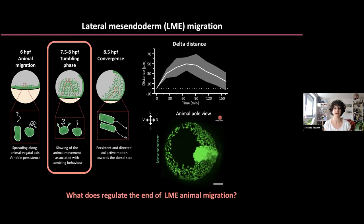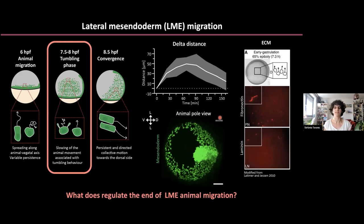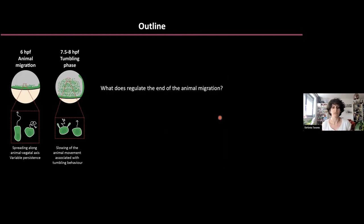Before we dive into the data, there is an important characteristic of the early zebrafish embryo. ECM only starts to be deposited at this time, and it has been shown that it is not important for lateral mesendoderm migration. To answer what regulates lateral mesendoderm migration, I focus on a specific component of the extracellular environment: the substrate.